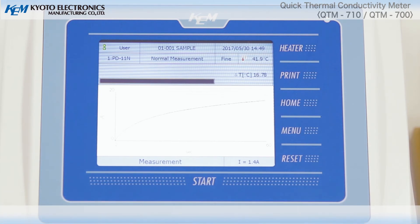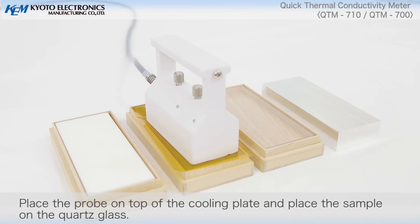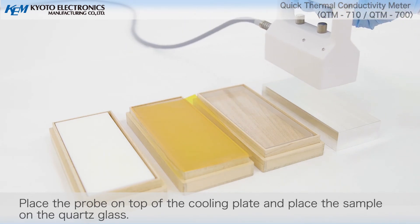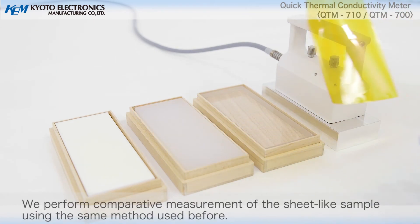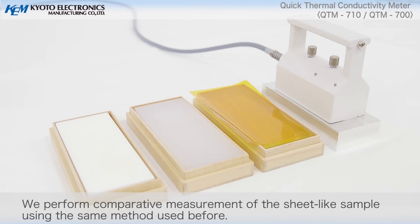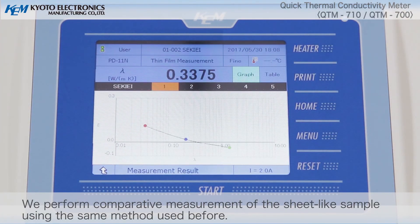After the measurement is complete, the result is displayed. Place the probe on top of the cooling plate and place the sample on the quartz glass. We perform comparative measurement of the sheet-like sample using the same method used before. Measurement of the sheet sample is over.